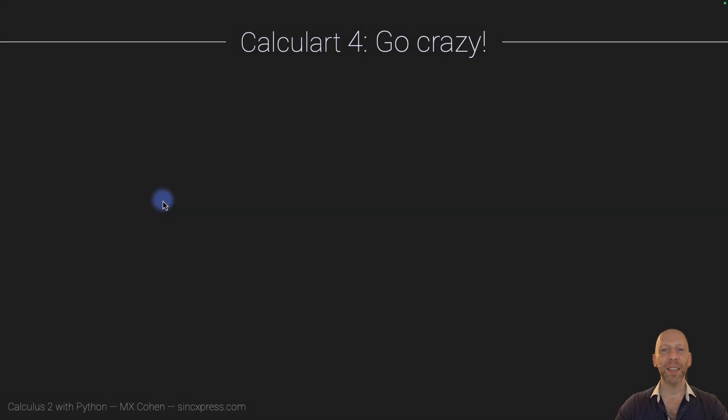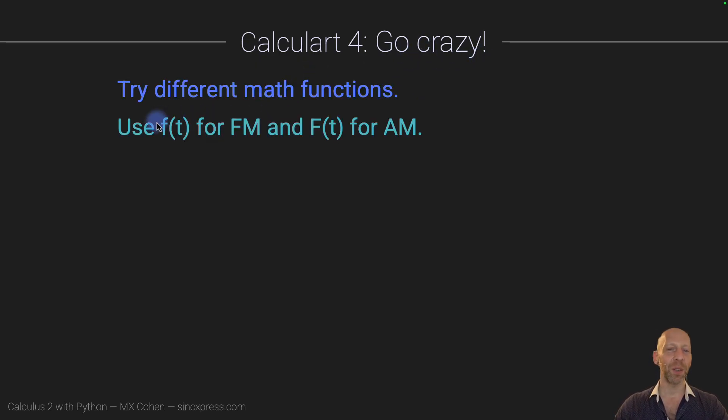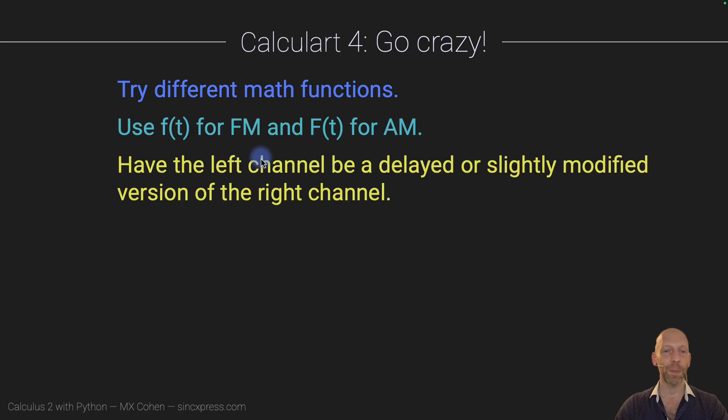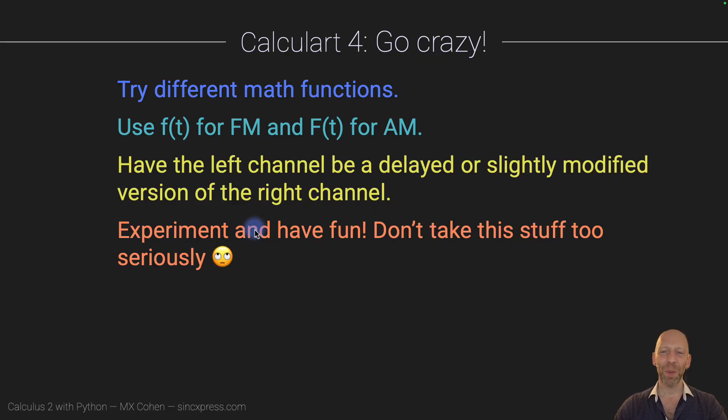Calculart 4 is for you to do. I want you to take the code that I wrote as the starting point, as inspiration to help you go crazy and be creative. You can try different math functions. You can try using the function for the frequency modulation and the integral of the function for the amplitude modulation. You can have the left channel be just the same as the right channel or very similar, but delayed or slightly modified, so delayed in time. For example, it starts maybe 100 milliseconds later. Experiment and have fun. Please do not take this seriously. We have enough serious stuff to deal with in the rest of the course.